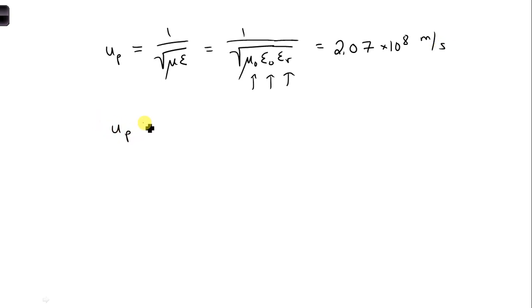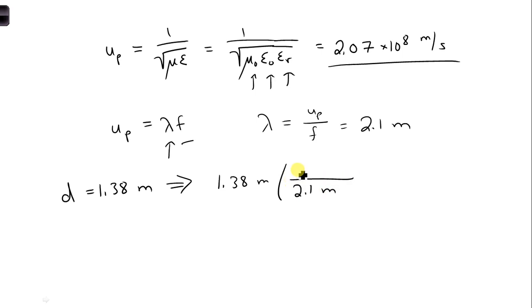Then we have another relationship for up, is lambda f. And that's where we see our lambda appear. So since we know up, and we are given f, the frequency, is 100 megahertz, then we can plug that in. We can solve for lambda. We have lambda is up over f, which turns out to be 2.1 meters. So the given distance of 1.38 meters can now be converted to wavelengths. So we would take, that would be 1.38 meters, and we have 2.1 meters per wavelength.